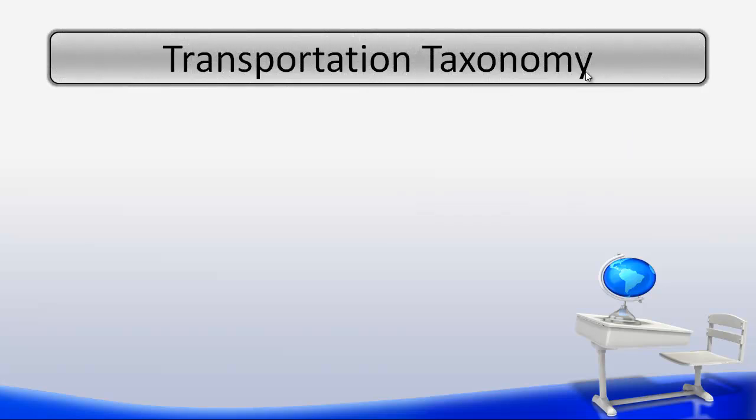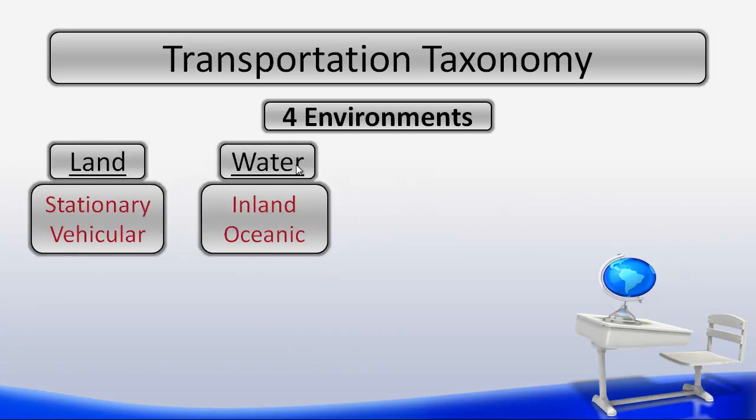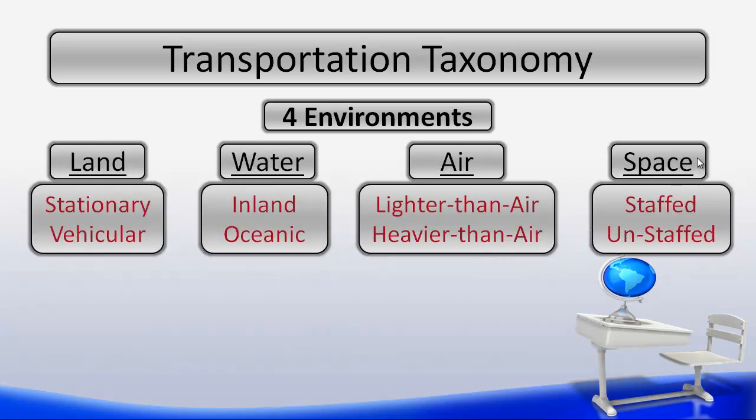To start the model, we're going to talk about the four environments of the model. The four environments include land, and there are two subcategories for land: stationary and vehicular. Then we have water as our second environment. It includes inland and oceanic. We have air, and its two subcategories are lighter than air and heavier than air. And we have space as our final environment, and it has staffed and unstaffed as its two subcategories.